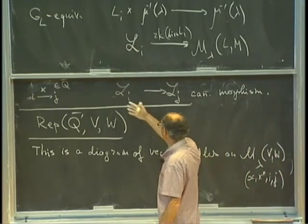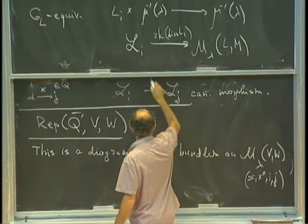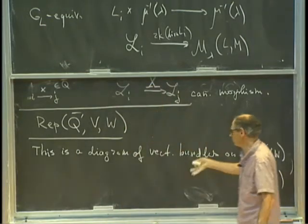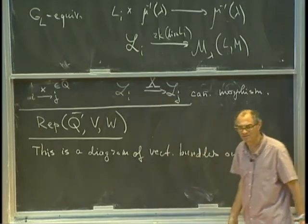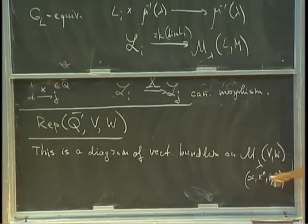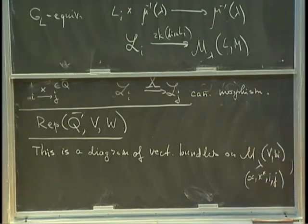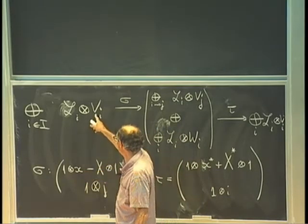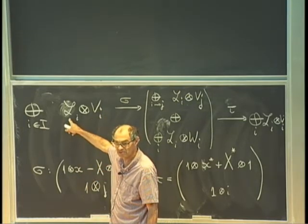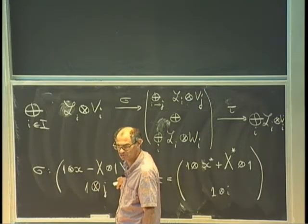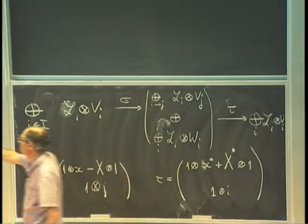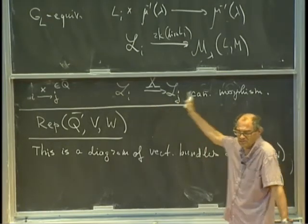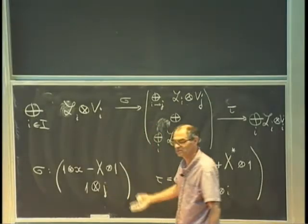The capital letters are the canonical bundle maps between tautological bundles (associated to the same edges), while the little ones are just linear maps between vector spaces in the representation. The whole diagram is in some sense self-dual — this part is an analog of the moment map and this part is transposed to it. The miracle — the claim — is that tau composed with sigma is zero, so it's natural to consider the cohomology in the middle.